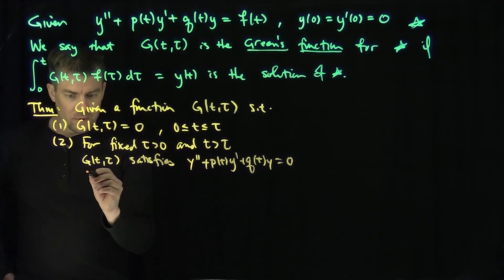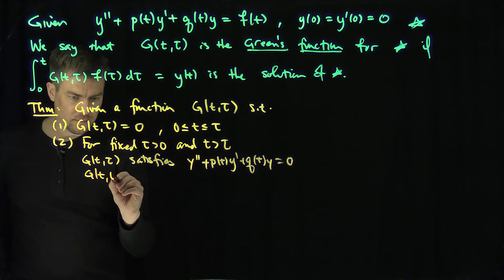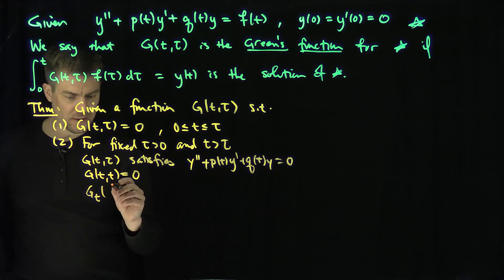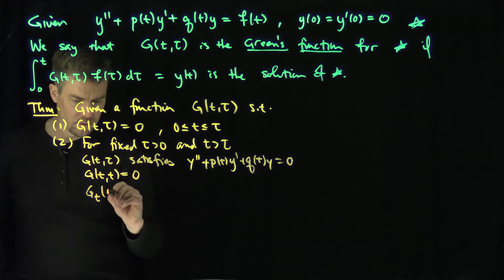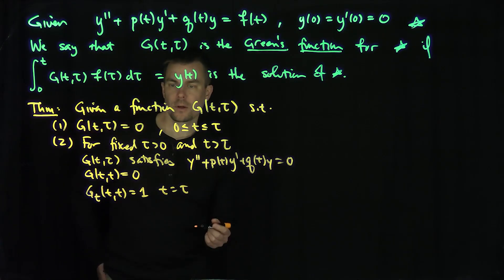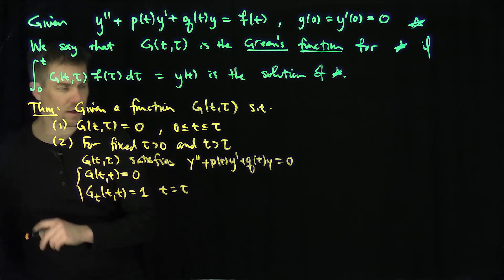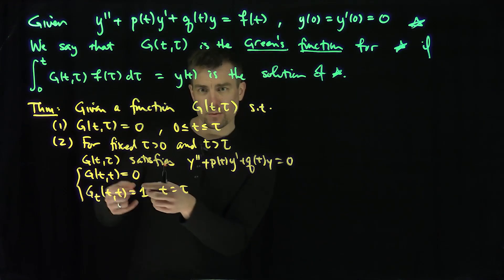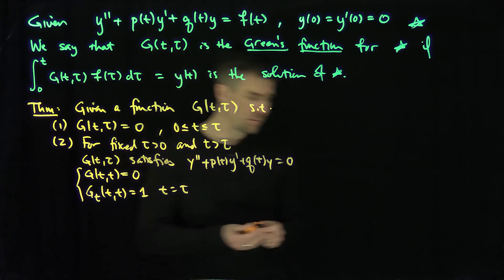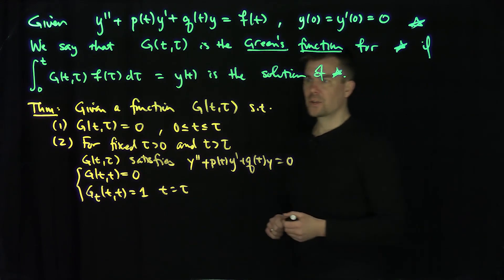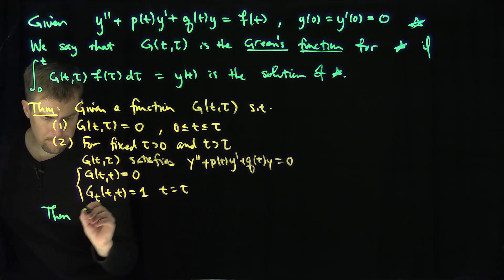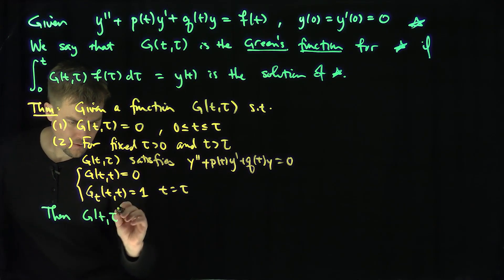And then with the boundary conditions: g(t, t) = 0 and the t-derivative g_t(t, t) = 1 on the diagonal t = τ. What this is really saying is that the derivative of g is the Dirac delta function on the diagonal t = τ from a more theoretical perspective. The conclusion is then that g(t, τ) is the Green's function.